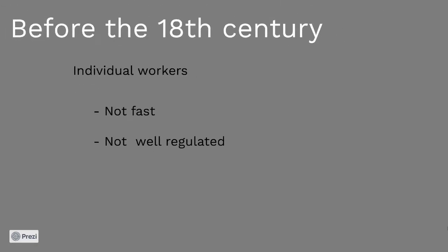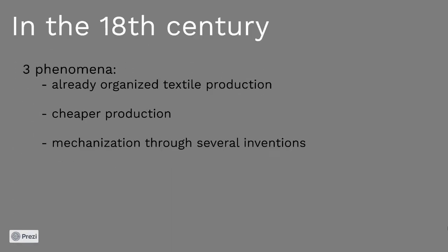But the system of individual workers was neither fast nor well regulated. In the mid-18th century, three factors pushed improvement in textile manufacturing. The production of textile was already organized, and this was the basis for a much more efficient system. Due to Americans' library, the cotton production increased and allowed for shipping production. And the last one: the mechanization of the industry through several innovations and inventions, like cast iron and the steam engine.